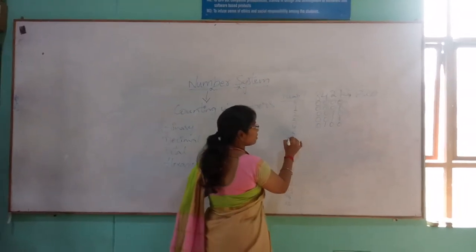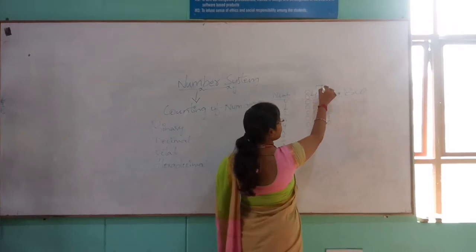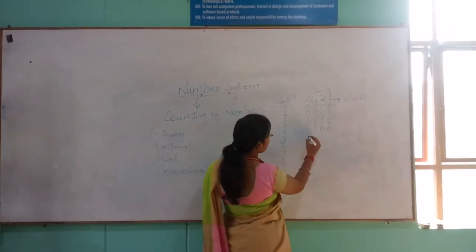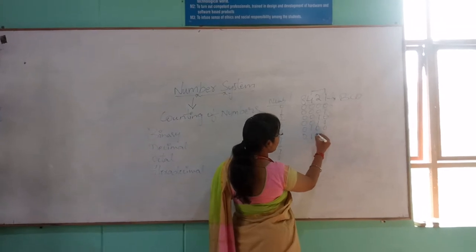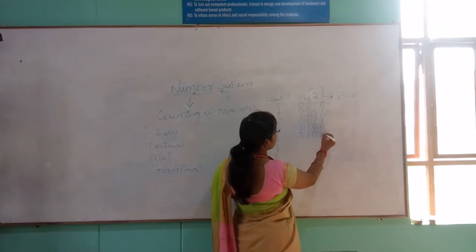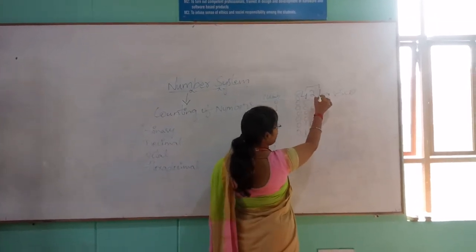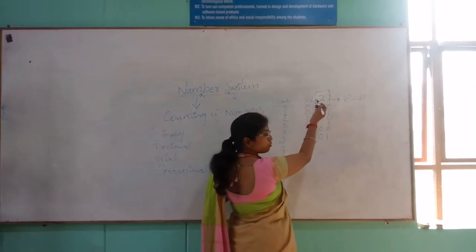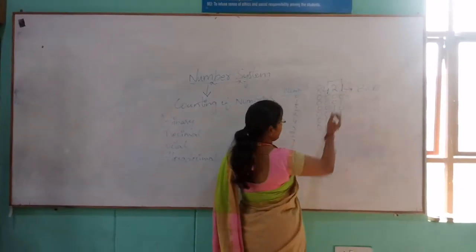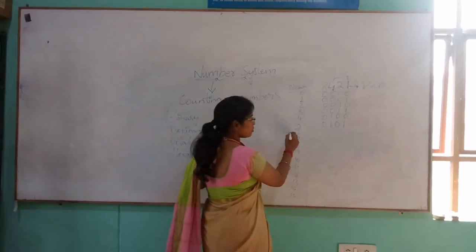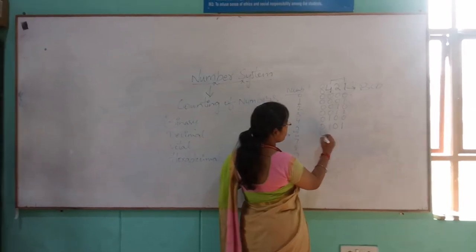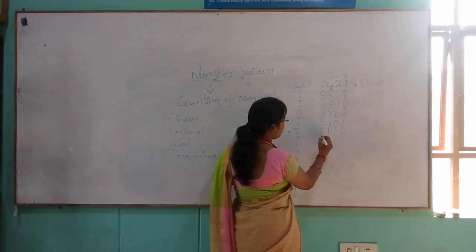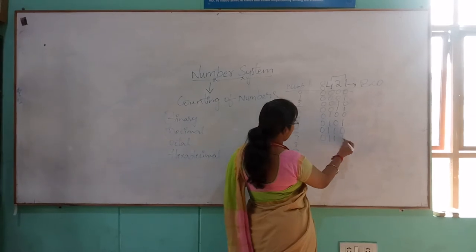From number 5 onwards, we should count two bits. For 5: 0, 1, 0, 1 — meaning 4 plus 1 equals 5, so we keep 1 at the position of 4 and 1 at the position of 1. For 6: 0, 1, 1, 0. For 7: 0, 1, 1, 1.